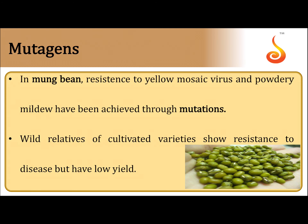Colorful vegetables are developed through mutation breeding and they have disease resistant character. One example is mung bean, developed through mutation breeding. Mung bean has yellow mosaic and powdery mildew disease resistant character.